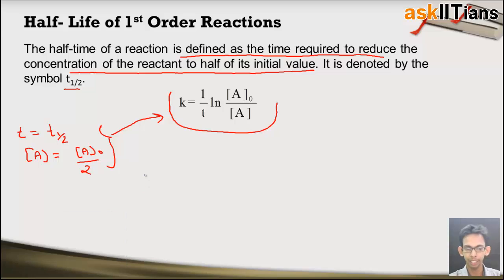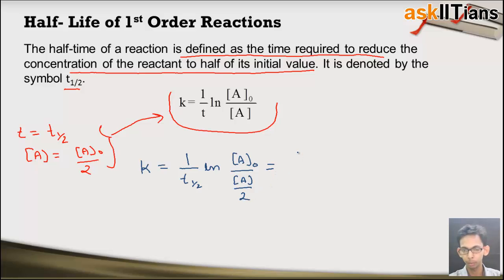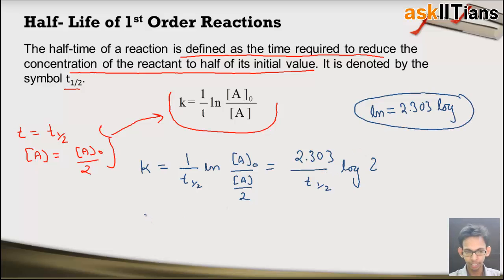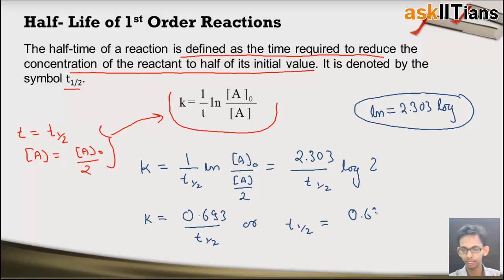Substituting, we get k equals (1/T-half) times ln(A0 / (A0/2)), which simplifies to k equals (2.303 / T-half) times log 2. Note that ln converts to log base 10 via the factor 2.303. Since log 2 equals 0.693, we arrive at k equals 0.693 over T-half, or equivalently T-half equals 0.693 divided by k. This is the expression for half life of a first order reaction.